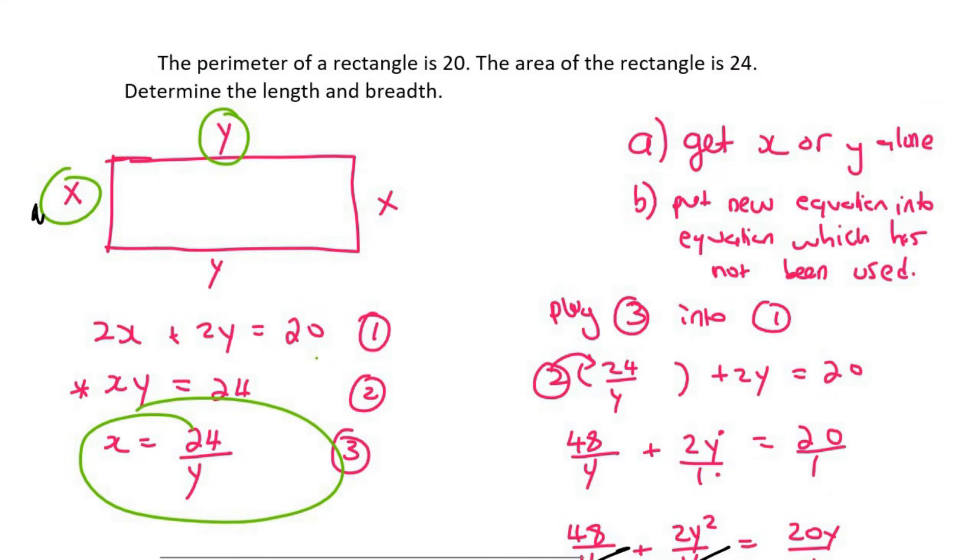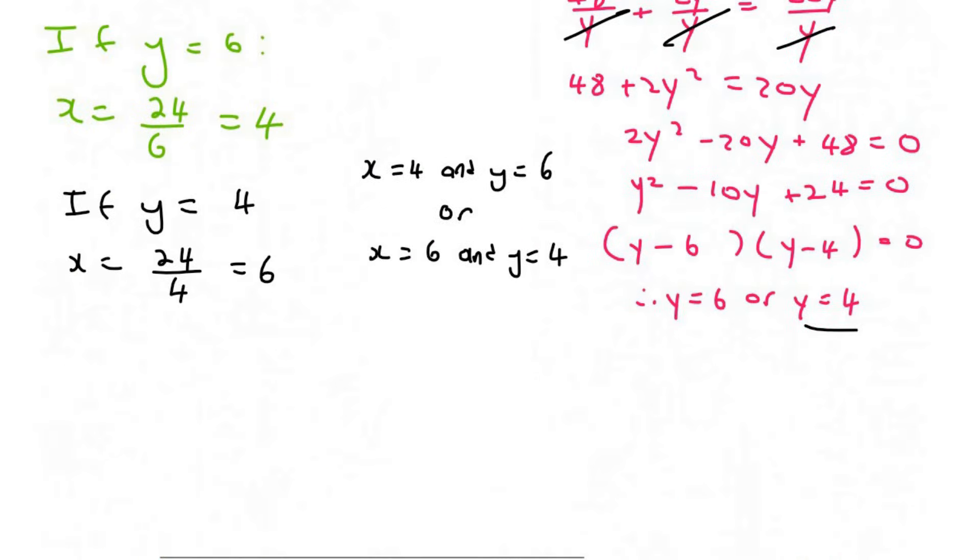So let's see if it makes sense. If, for example, x is 4, then they tell us that y would have to be 6. And so the perimeter would definitely be 20, and the area would also be 24. And so your final answers will be these over here.